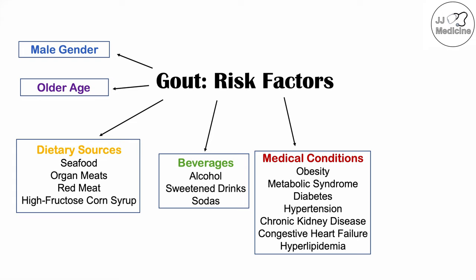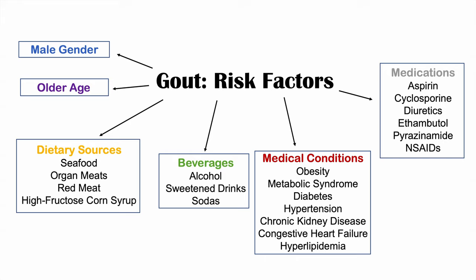Certain medical conditions are associated with increased likelihood of gout: obesity, metabolic syndrome, diabetes, hypertension, chronic kidney disease, congestive heart failure, and hyperlipidemia — some due to dietary issues, others due to decreased excretion of uric acid. Medications that increase risk include aspirin, cyclosporine, thiazide diuretics like hydrochlorothiazide, ethambutol, pyrazinamide, and NSAIDs. Genetics also plays a role, with certain genes associated with an increased risk of gout.